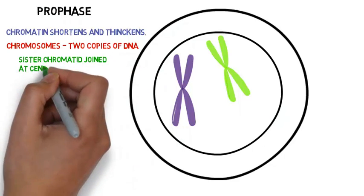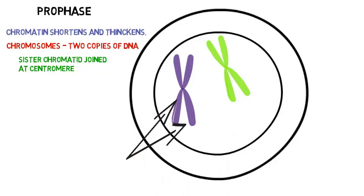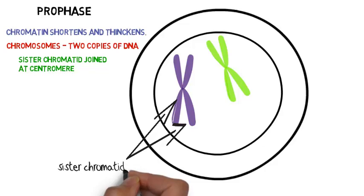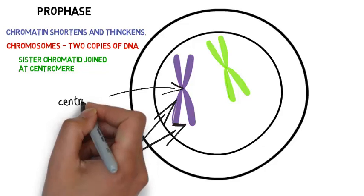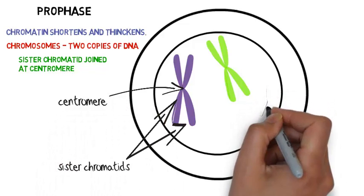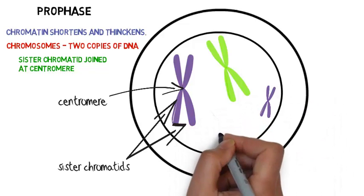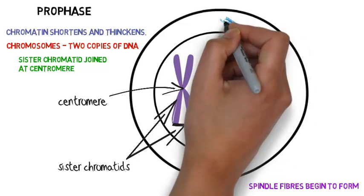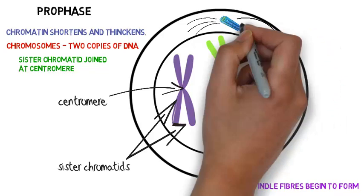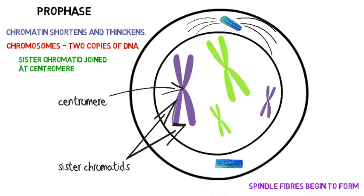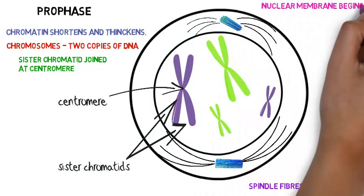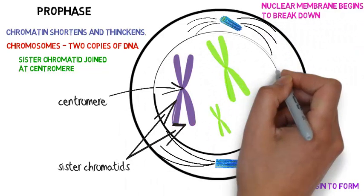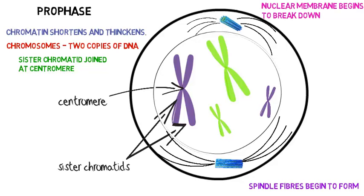We can see those two identical copies: the purple one has two identical copies and the green one has two identical copies. We call them sister chromatids. The sister chromatids are drawn together by what we call a centromere, and they are identical copies of the DNA of that chromosome. We're looking at two homologous chromosomes — one from each parent. The spindle fibres start to form at this point, the centrioles move to either pole — top and bottom of the cell — and the nuclear membrane begins to break down.